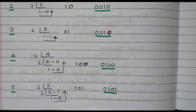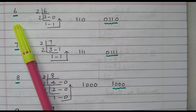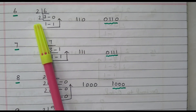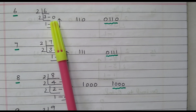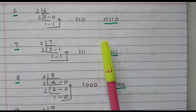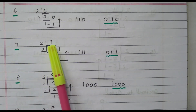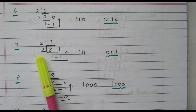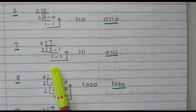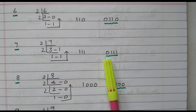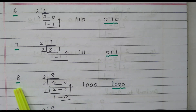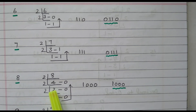For decimal 6, divide by 2: it goes 3 times with remainder 0; again divide: 1 time with remainder 1. Writing in reverse gives 110, so in 4 digits it is 0110. For decimal 7, divide by 2: 3 times with remainder 1; again divide: 1 time with remainder 1. Writing in reverse gives 111, so in 4 digits it is 0111. For decimal 8, divide by 2: 4 times with remainder 0; again divide: 2 times with remainder 0; again divide: 1 time with remainder 0. Writing in reverse gives 1000.